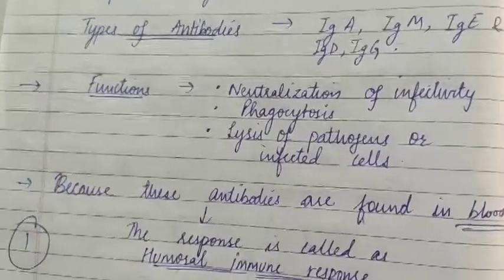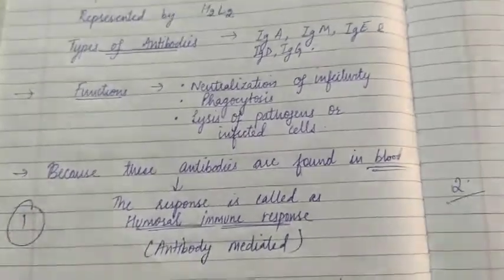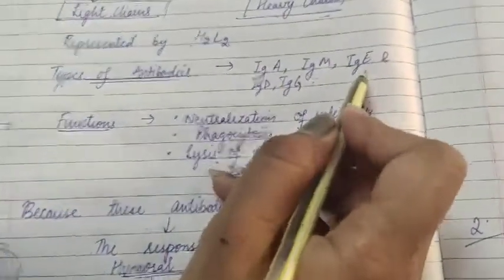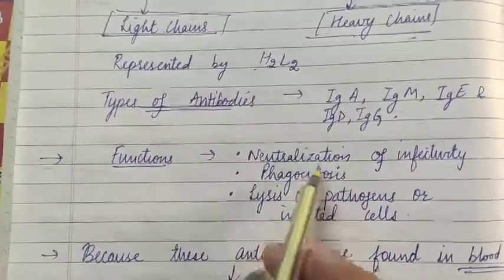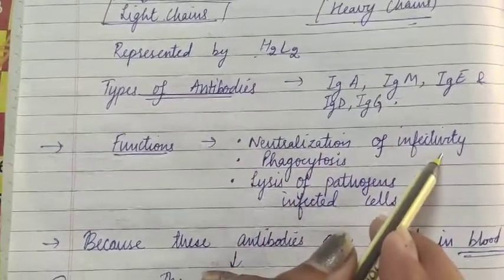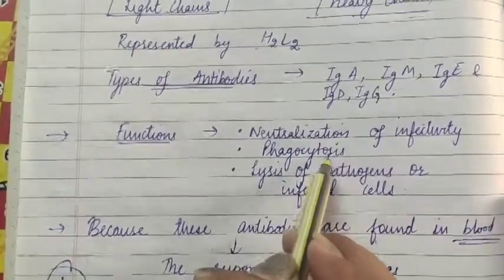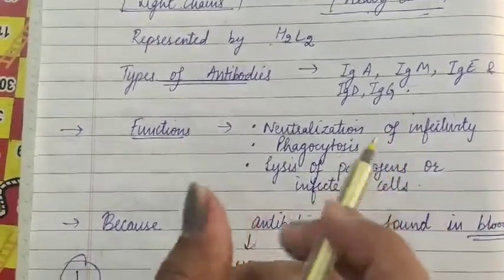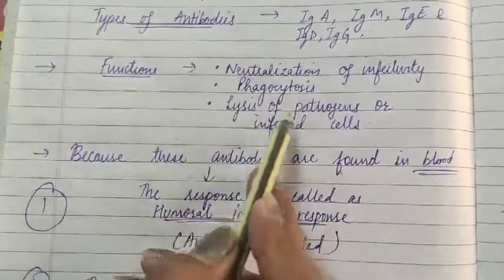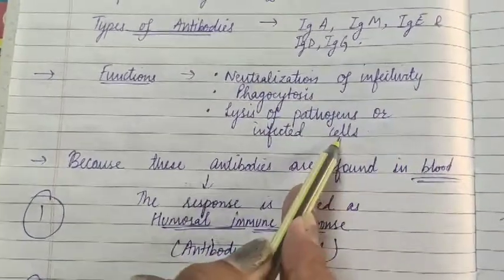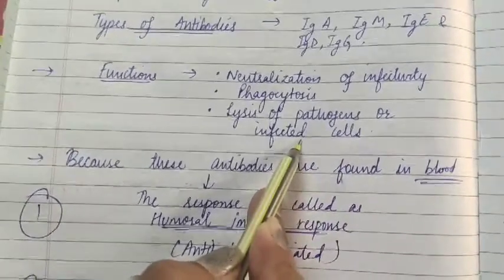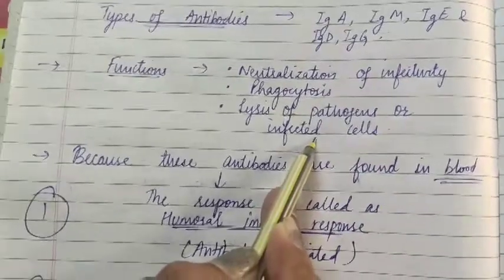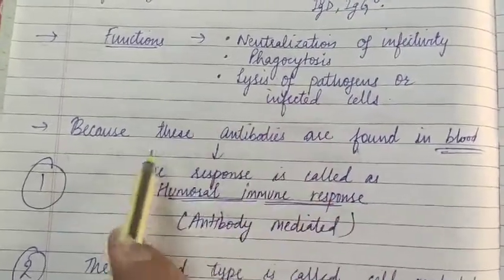There are different types of antibodies, each with different functions: IgA, IgM, IgE, IgD, and IgG. Their functions include neutralization of infectivity — neutralizing infection; phagocytosis — engulfing and removing microbes from the body; and lysis of pathogen or infected cell — breaking down pathogens or infected cells and expelling them from the body.